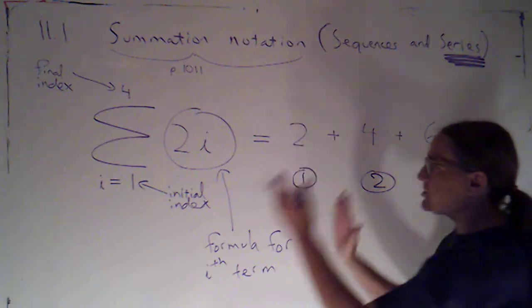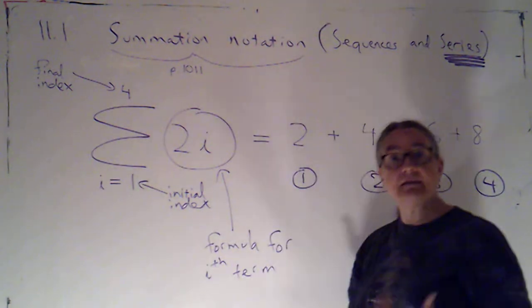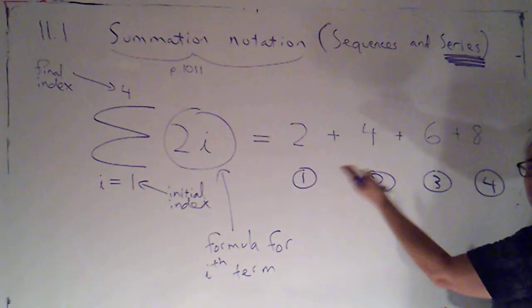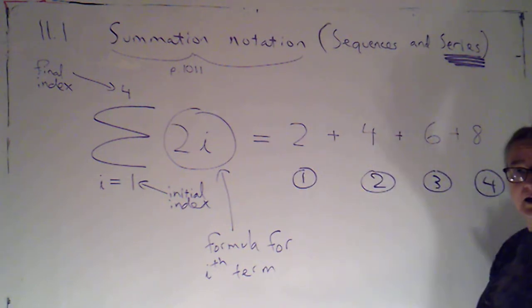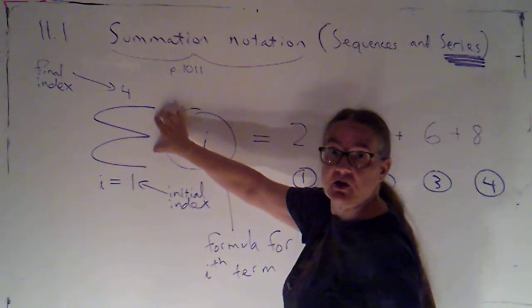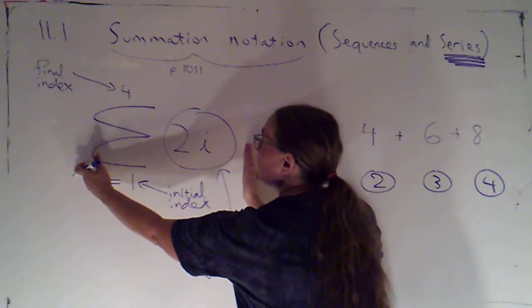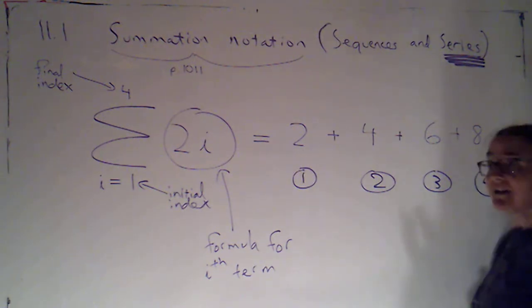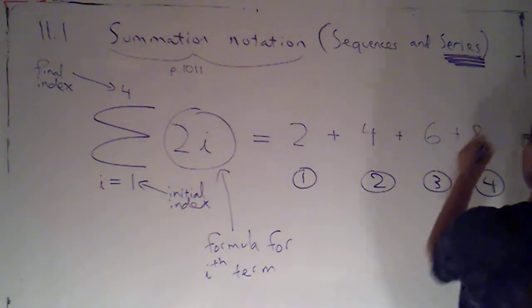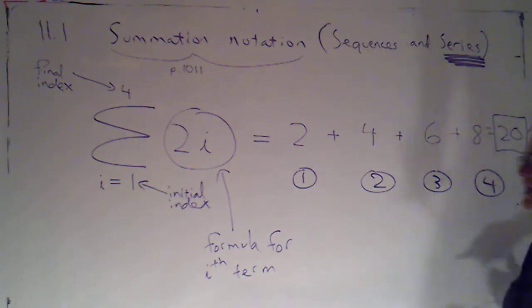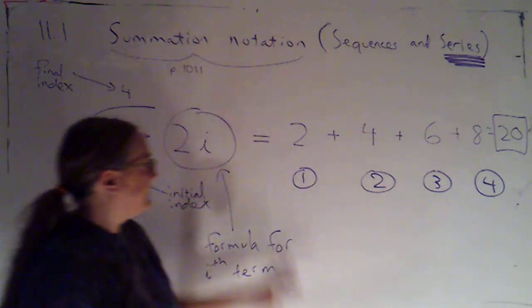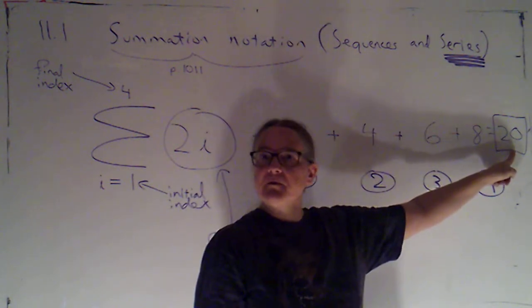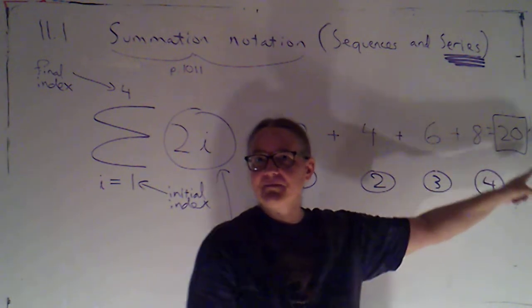So in this section, we're going to be given sums like this that are written in summation notation. But they're going to be relatively short sums so that it's not too tedious to write them out one term at a time. And we're just going to practice understanding what this notation means. So we're going to go from this form using the summation notation to writing it out as a sum of individual terms. And then don't forget to actually do the math, to actually do the addition. We had said this was 20. So if we were asked to evaluate this sum, we would first of all write it out this way and then do the arithmetic, do the actual addition.